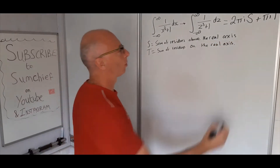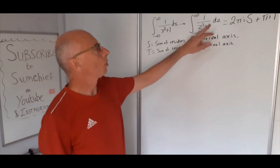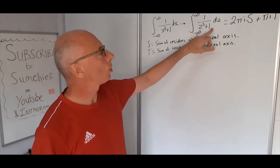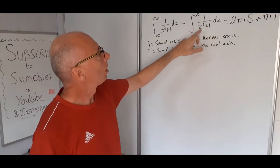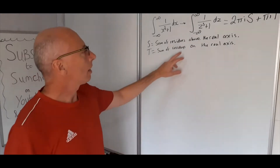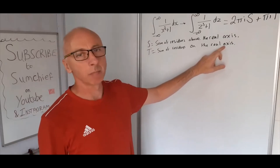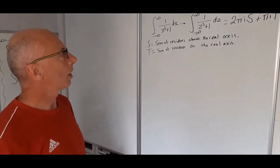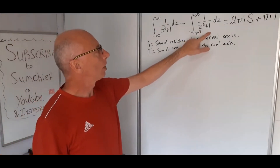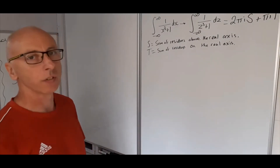There are a couple of rules before we can progress. First, the polynomial in the denominator must be a degree of 2 or more greater than the numerator — since this is z cubed, that is fine. The other rule is that the residues on the real axis must be simple poles; no other kinds of poles are allowed.